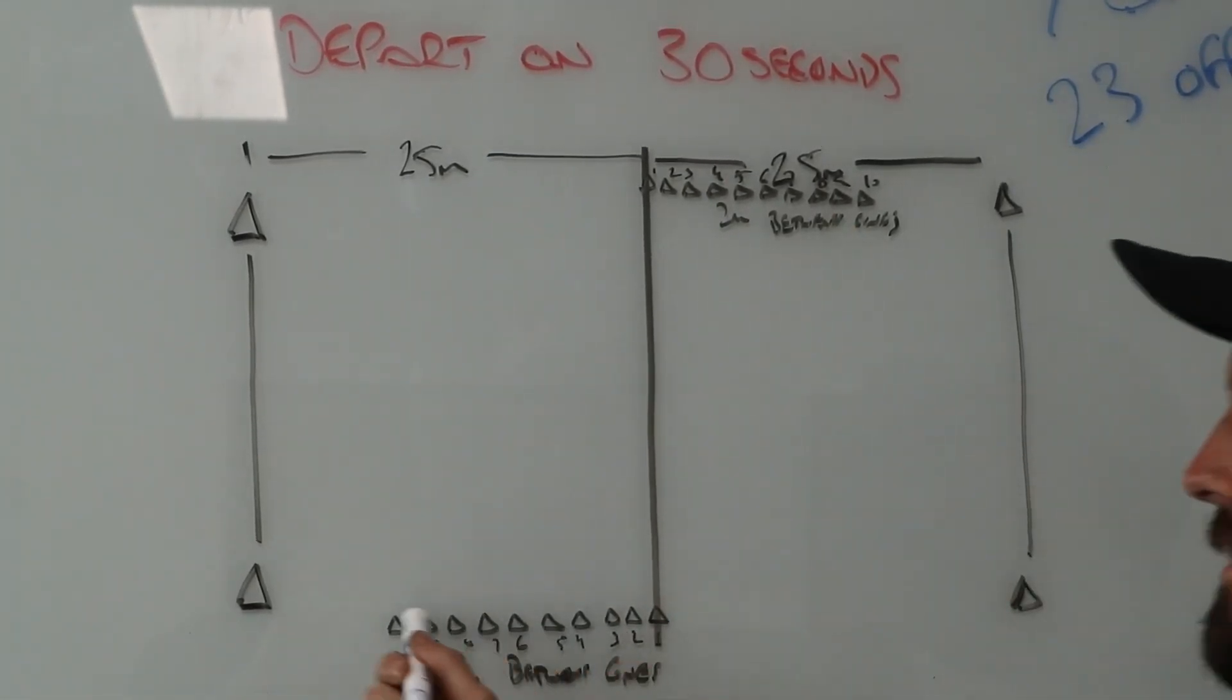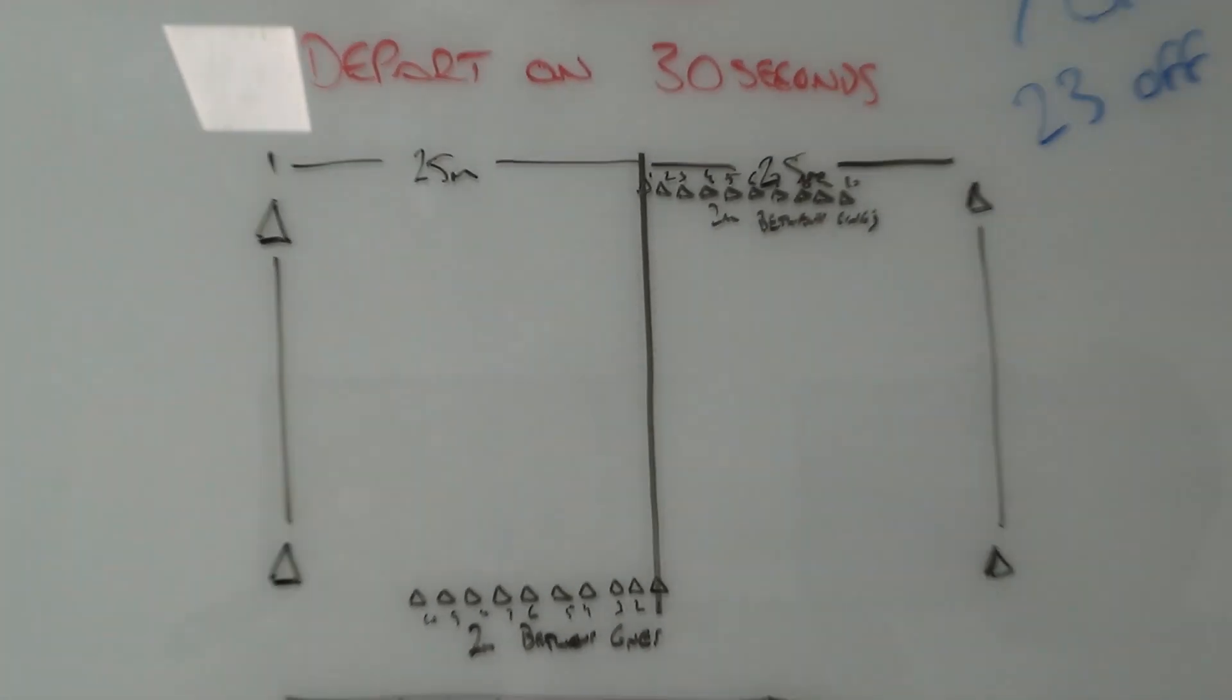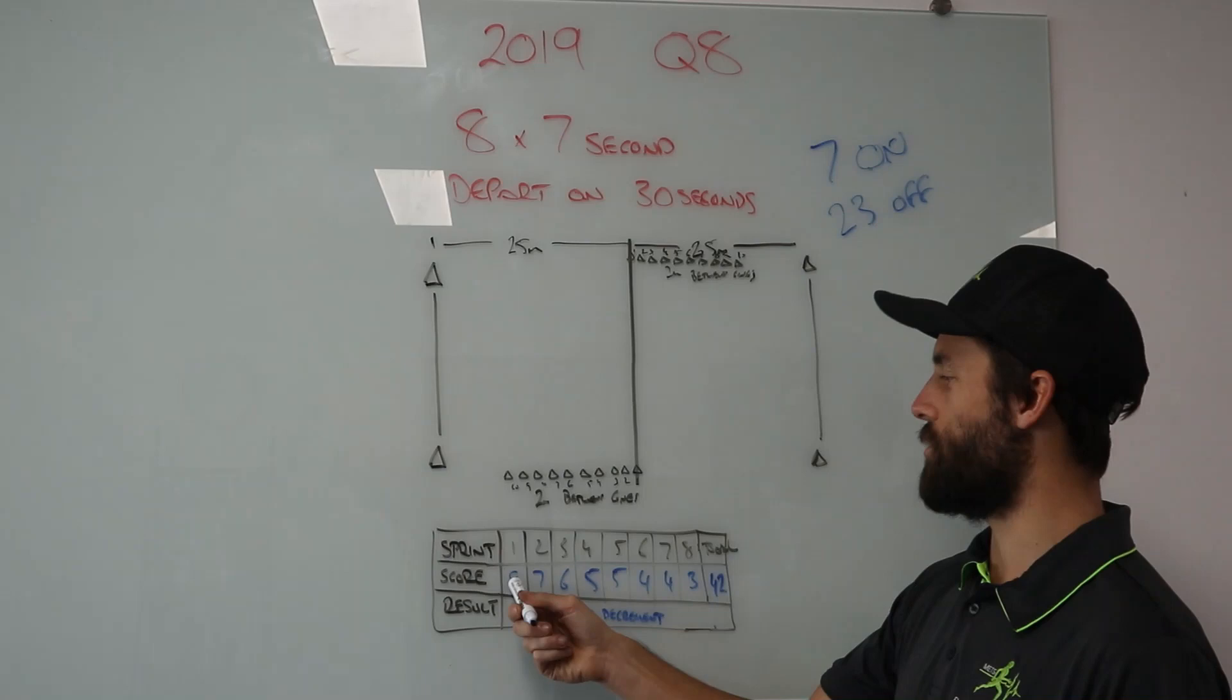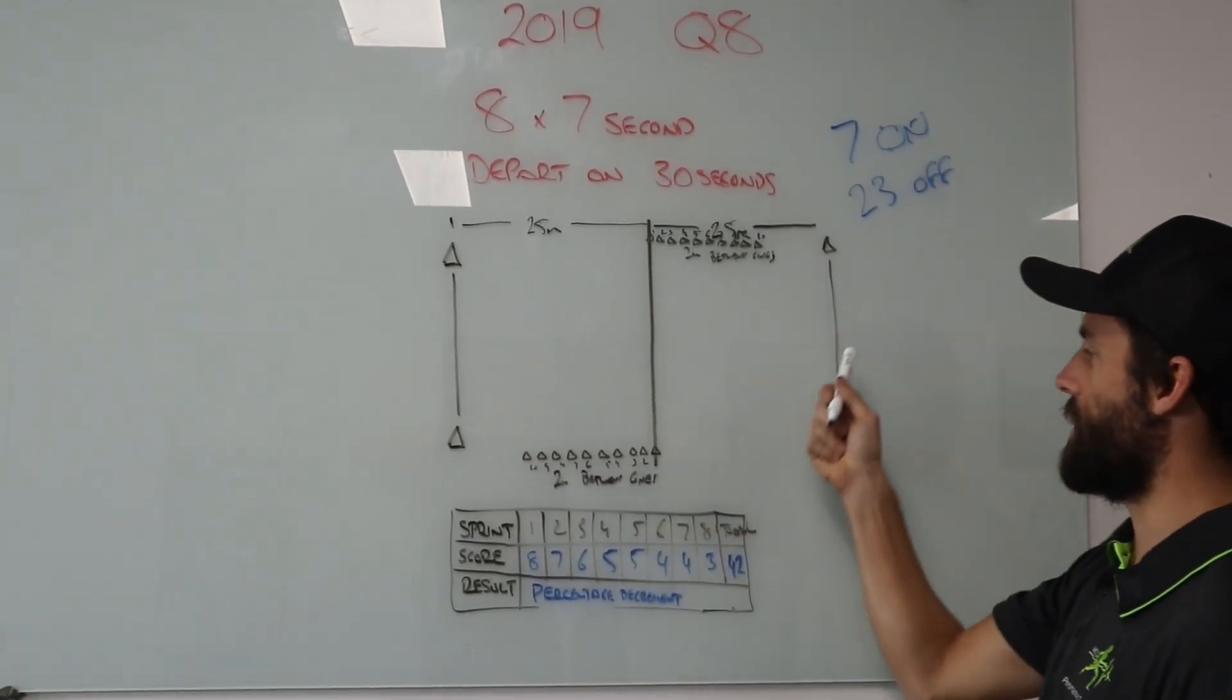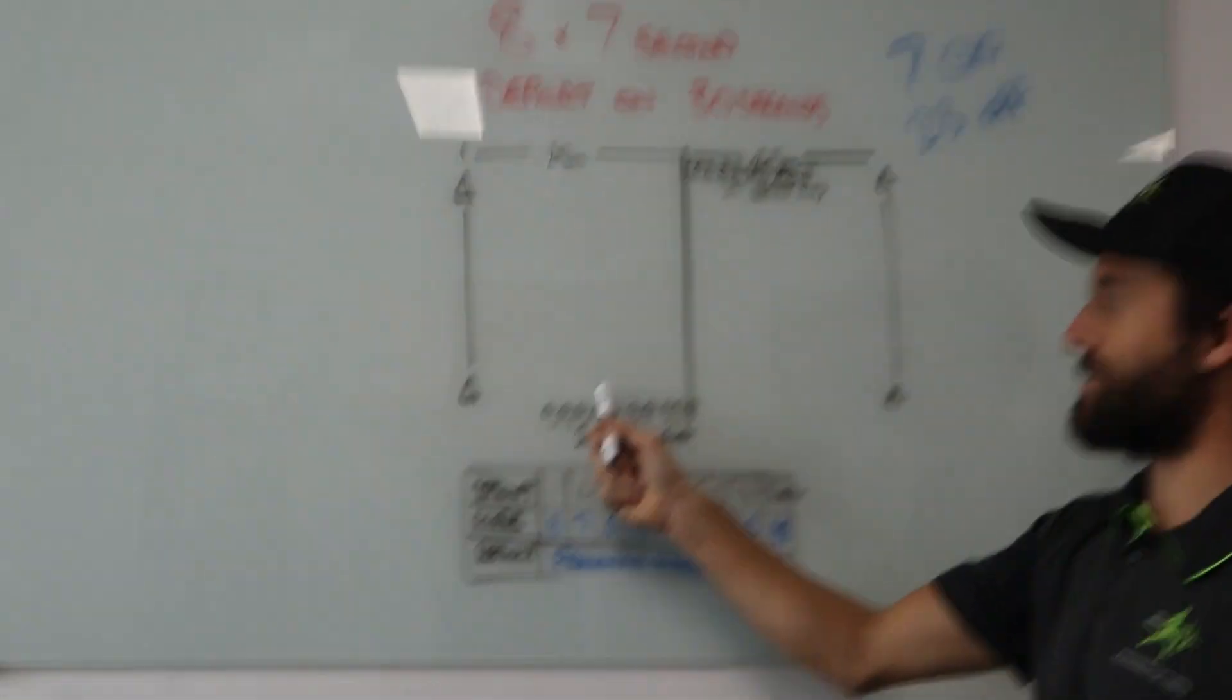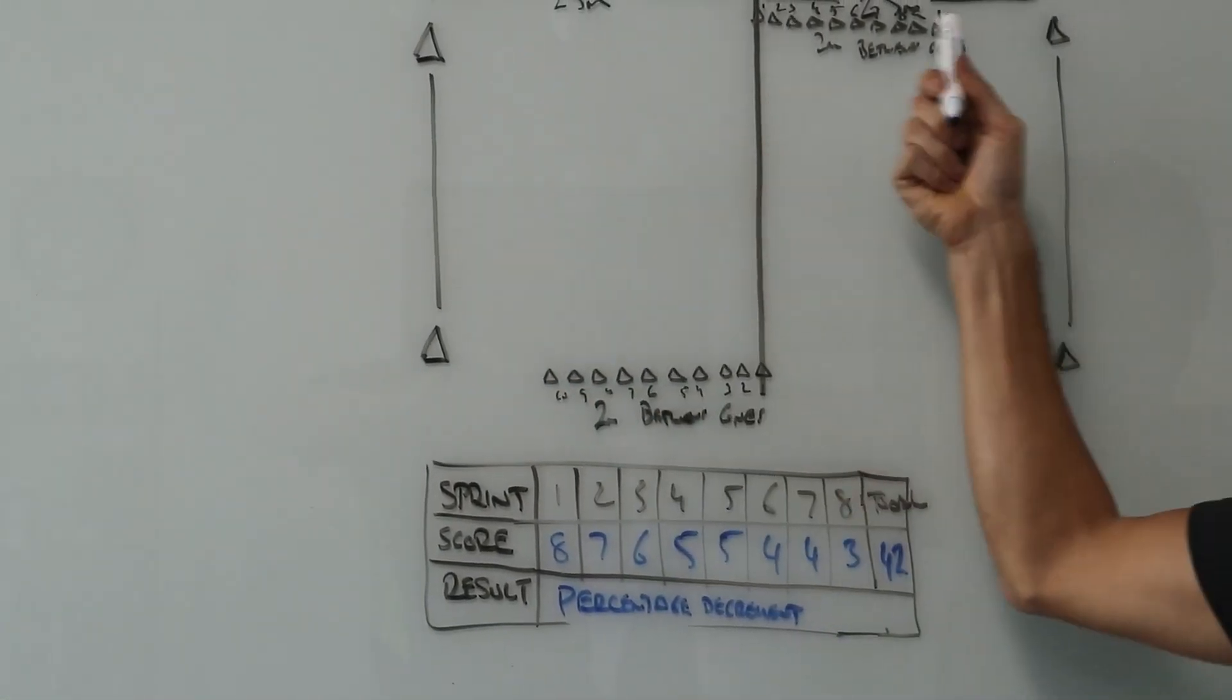So we don't need to know too much about that, but the way we score it is we count how many cones we made it past. In the first sprint the athlete got past eight cones, in the seven seconds they had their recovery they go again, second sprint they got past seven cones.